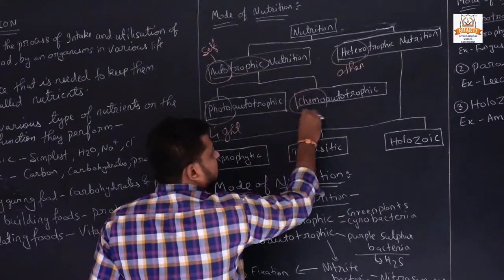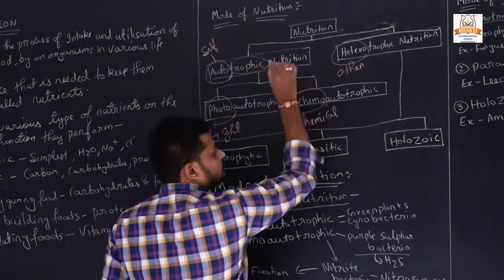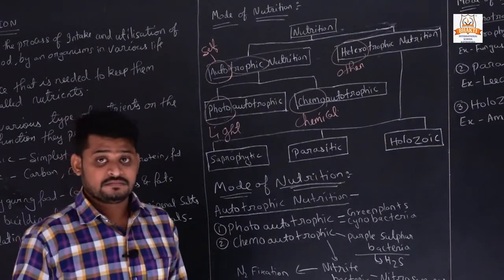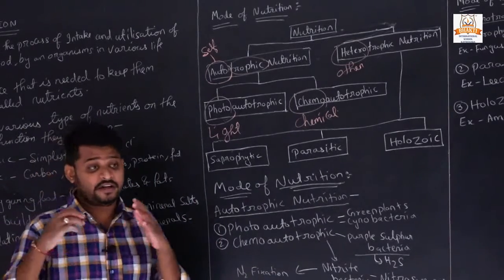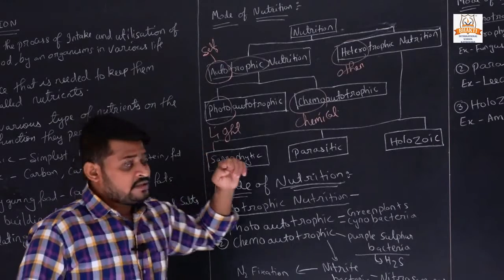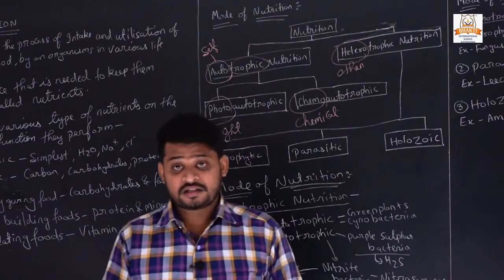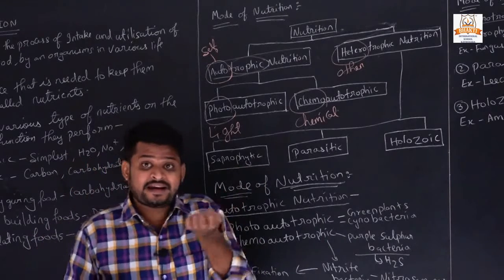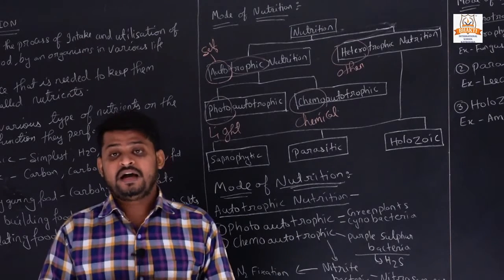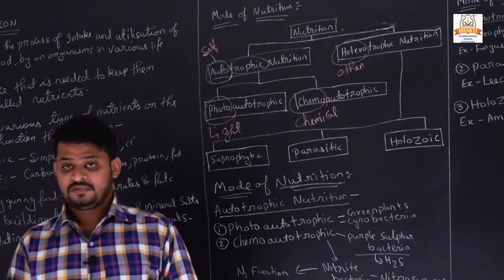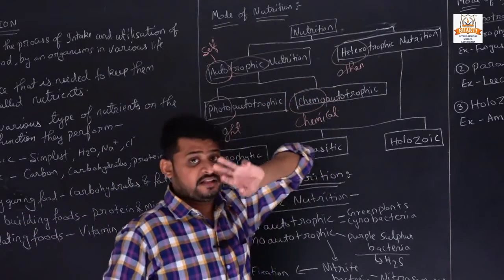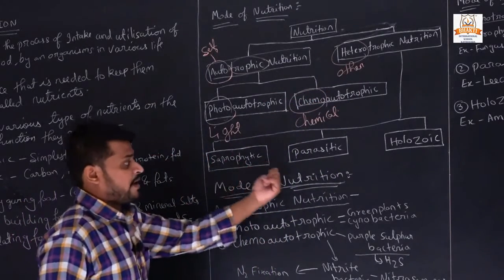'Chemo' means chemical - these organisms use chemicals to make their food. Some organisms live in the ground, in the earth's crust, where they do not get sunlight. So they make their food by using chemicals from their surroundings - that is chemo-autotrophic nutrition. Now, heterotrophic nutrition has three types: saprophytic, parasitic, and holozoic. Each and every animal does not have the same mode of nutrition - for example, we eat rice, but a mosquito does not eat rice.